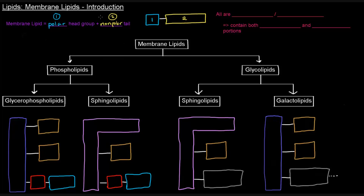All of these membrane lipids that we'll talk about are amphipathic or amphiphilic, which means they contain both polar or hydrophilic and nonpolar or hydrophobic portions. Now, membrane lipids can be divided in a variety of ways, but I've divided them up as: you could have phospholipids or you could have glycolipids.